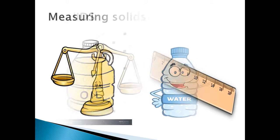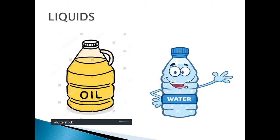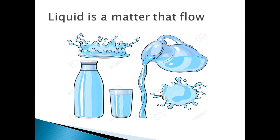Now we are talking about liquid — the second state of matter. Look at these two pictures and tell me how oil and water are alike. Yes, very good — both are liquids! Liquid is a state of matter that can flow. Liquid doesn't have its own shape; it takes the shape of the glass or the cup — it takes the shape of its container.